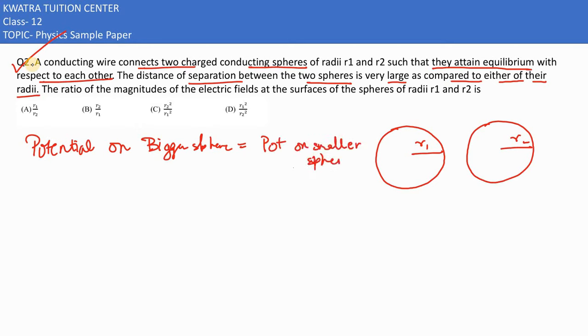Potential on bigger sphere is equal to potential on smaller one. Here in this case, if we talk about the bigger sphere, it would be KQ1 in division by R1, and on the other side KQ2 over R2 would be there. If you compare both sides, K and K cancel.